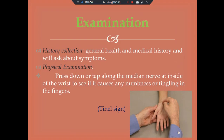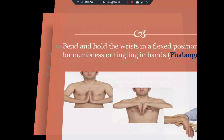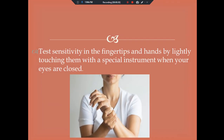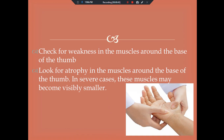Examinations. The first examination is history collection — general health, medical history, and asking about symptoms. The second is physical examination. The Tinel's sign involves pressing down or tapping along the median nerve at the inside of the wrist to see if it causes numbness or tingling in the fingers. The Phalen's test involves bending and holding the wrist in a flexed position to test for numbness or tingling in the hands. Sensitivity in the fingertips is tested by lightly touching them with a special instrument with eyes closed. The clinician also checks for weakness and looks for atrophy in the muscles around the base of the thumb — in severe cases, these muscles may become visibly smaller.